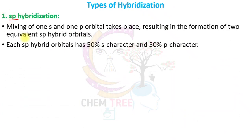In SP hybridization, 1s and 1p orbitals are mixed to form two equivalent SP hybrid orbitals. The percentage of S and P character is 50% each.